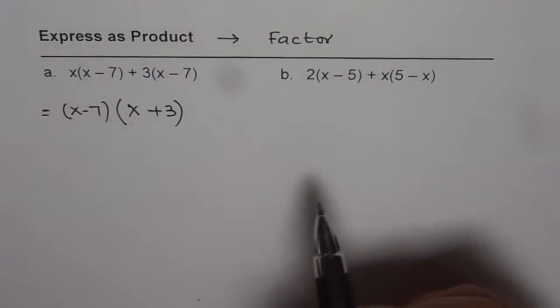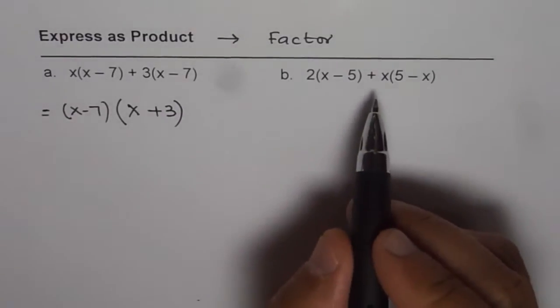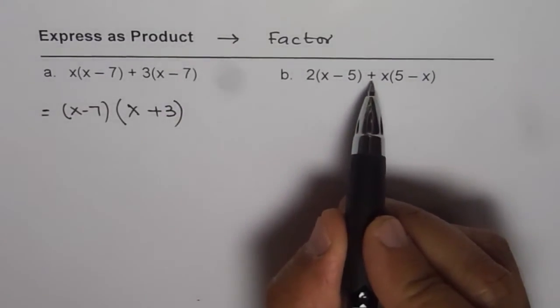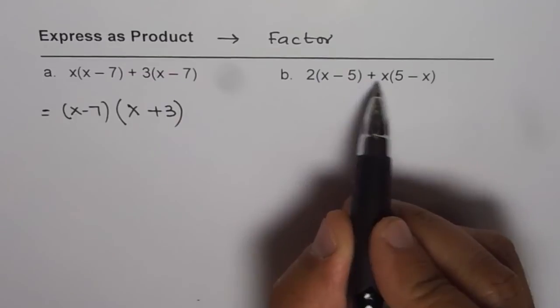So it doesn't look like they have a common factor. But imagine if we factor out minus 1 here, then what do we get?